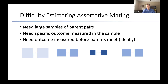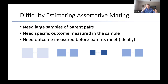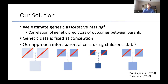The tricky thing is that estimating assortative mating is hard to do in a direct, straightforward way. You gather a large sample of parent pairs, measure the outcome in all of these parents, and take the correlation of the outcome between the two parents. Ideally, you'd have the outcome measured before the parents even met, because of a potential reflection problem. For BMI, for example, there's a high spousal correlation in the observational data, but you can't tell if spouses were at higher risk before they met, or if it's because they spend a lot of time together and have the same diets — a convergence of BMI over time.